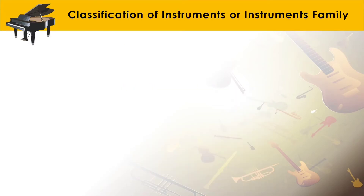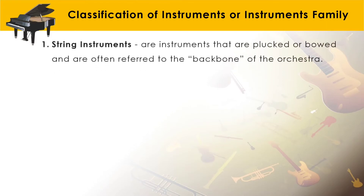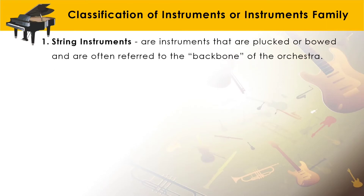The different instruments used in an orchestra belong to four main sections, and they are classified by family. Number one: string instruments. These are instruments that are plucked or bowed, and are often referred to as the backbone of the orchestra.